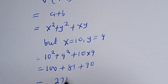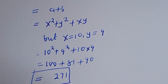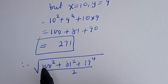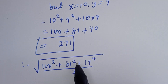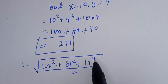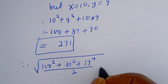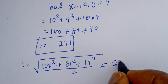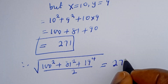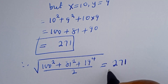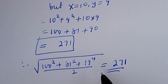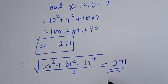Adding everything together gives 271, and this is the final answer. Therefore, the square root of 100 squared plus 81 squared plus 19 to the power of 4, divided by 2, is equal to 271. I hope you enjoyed the video — please don't forget to like, share, comment, and subscribe to my channel. Thank you, bye bye!